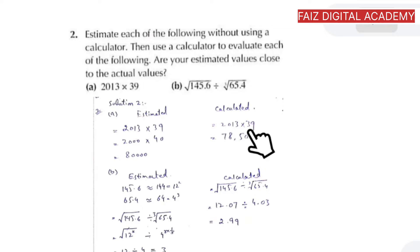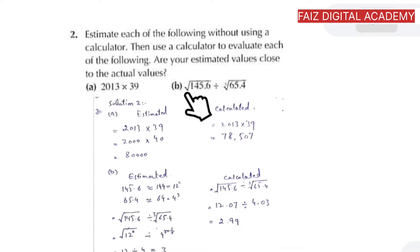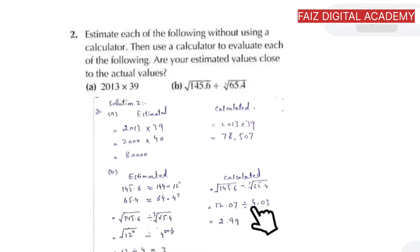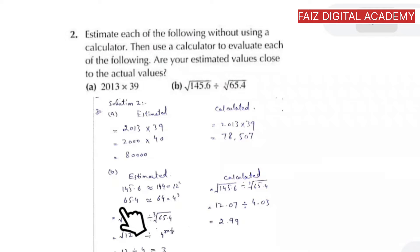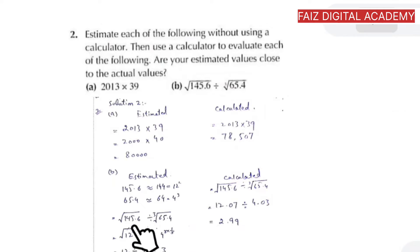For part (b), we need to find the square root of 145.6 divided by the cube root of 65.4. Using a calculator we get 2.99. Using estimation: 145.6 is quite close to 144, which is 12 squared, and 65.4 is quite close to 64, which is 4 cubed. Simplifying gives the estimated answer of 3.